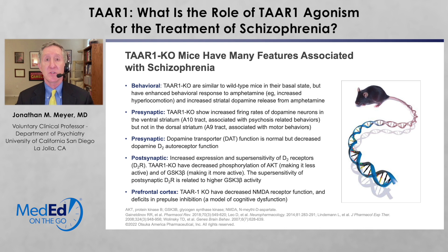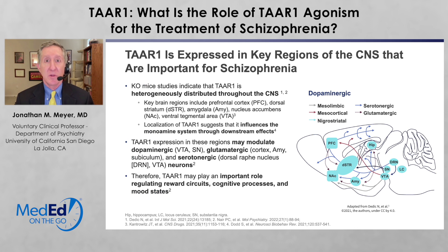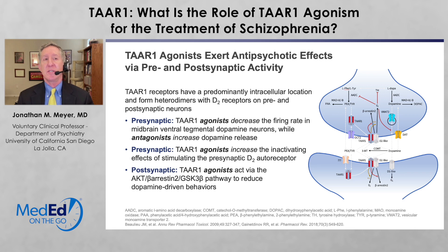We don't see problems with dopamine transporter function. What we're seeing is a lot of presynaptic dopamine release in areas which look like the areas in the human brain associated with psychosis. And not surprisingly, when you look at the human brain you see that TAAR1 receptors are expressed in those key regions felt to be important for schizophrenia, especially in the striatum and also in the cortex.